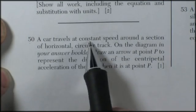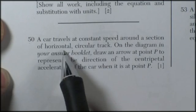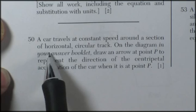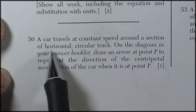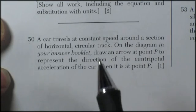Question 50. A car travels at constant speed on a section of horizontal circular track. Horizontal means it's a flat track. It doesn't have banked curves to it, which changes everything, trust me.